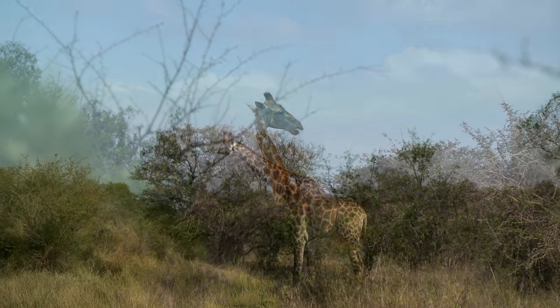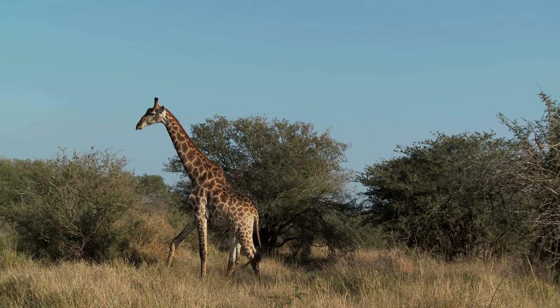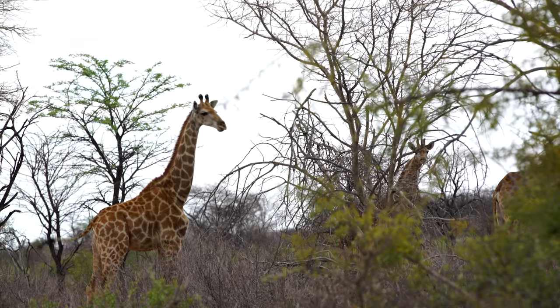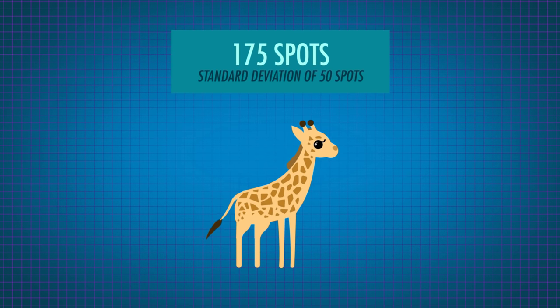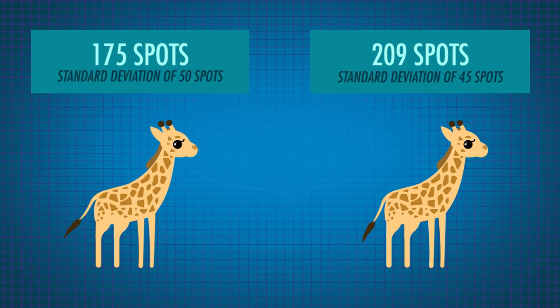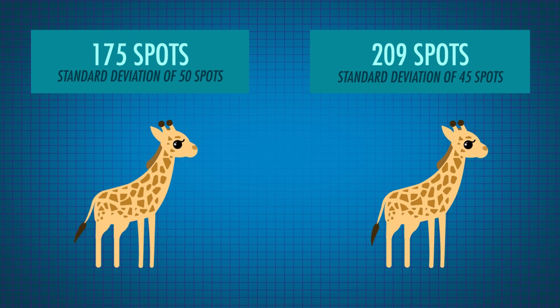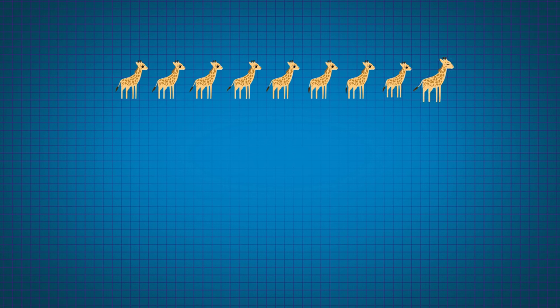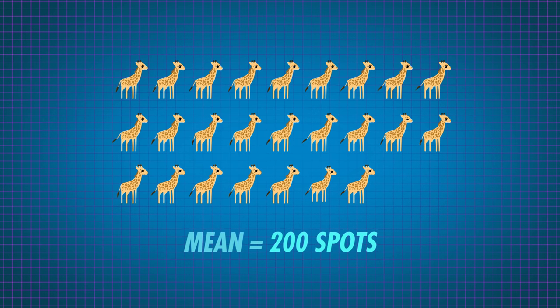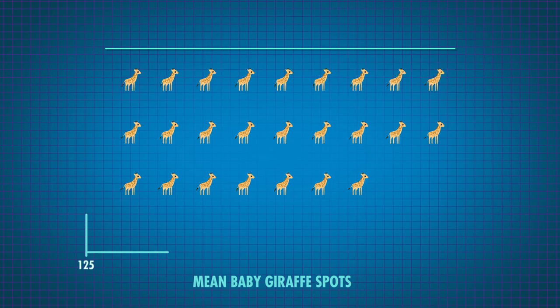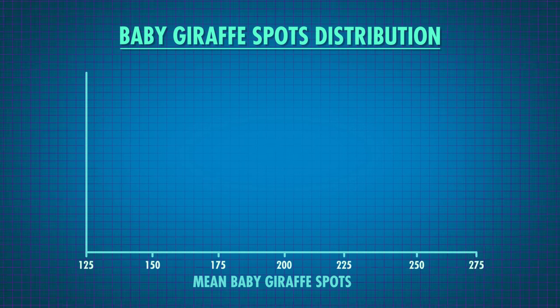In theory, one way you could test a hypothesis is by how well it predicts the data you got. For example, you and your best friend love giraffes and both have a hypothesis about the average number of spots a baby giraffe has. You think baby giraffes have an average of 175 spots with a standard deviation of 50, and your friend thinks an average of 209 spots with a standard deviation of 45. With zoo permission, you collect a random sample of 25 baby giraffes and find a mean of 200 spots.